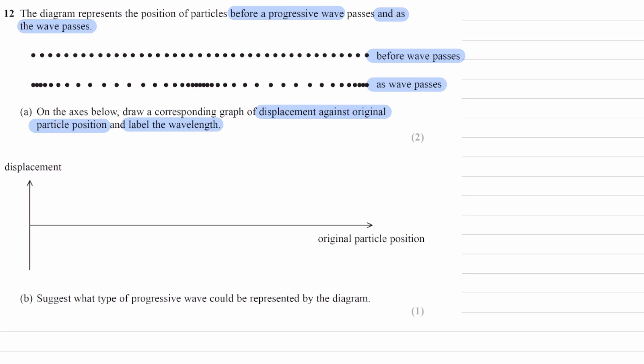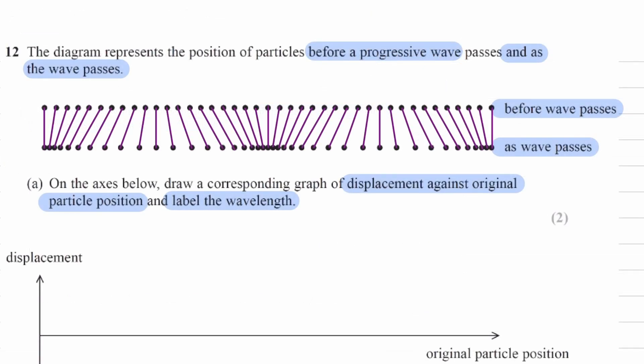So what I'll do to start with this question is draw lines connecting these particles. Now it should be much easier to see how the particles have been displaced as this wave has passed through.